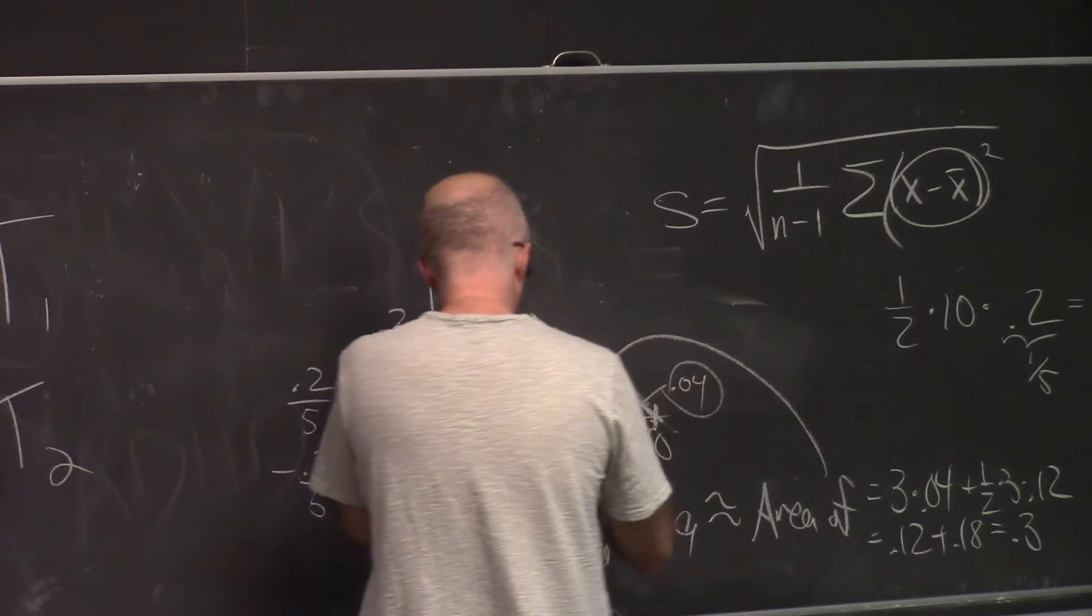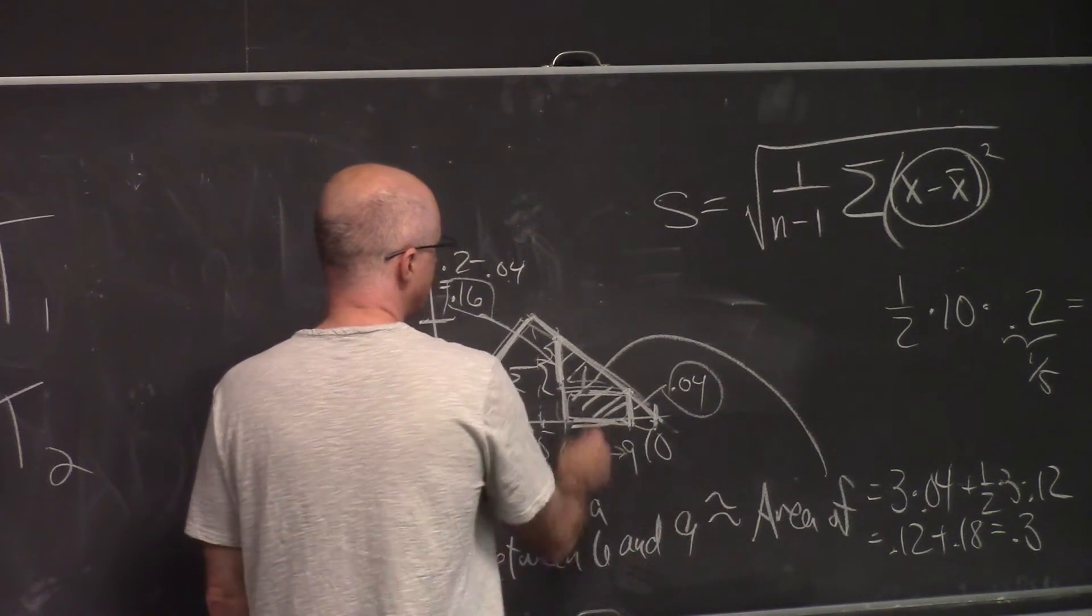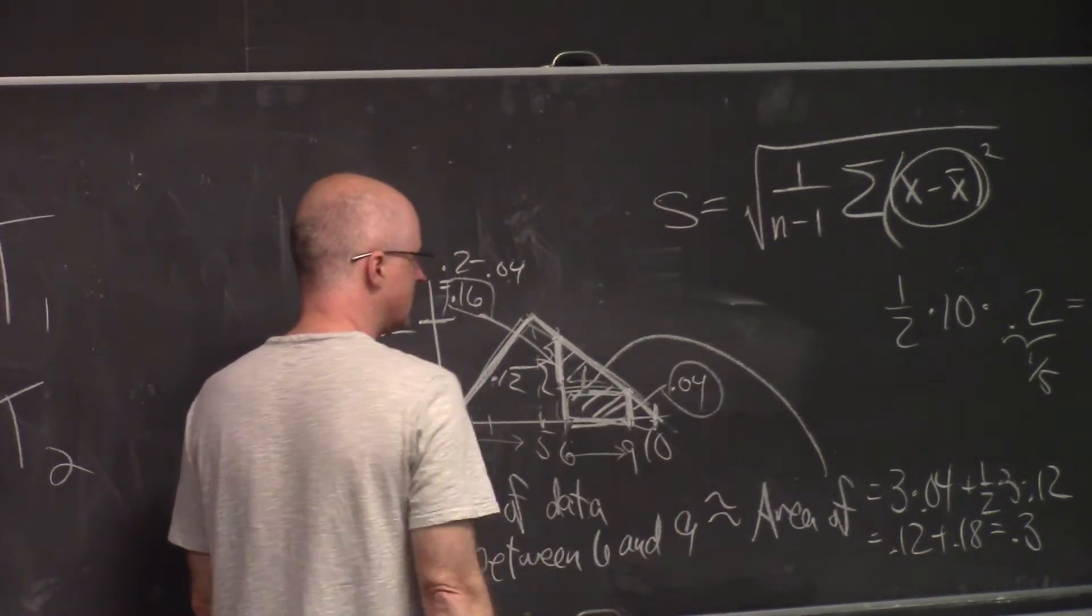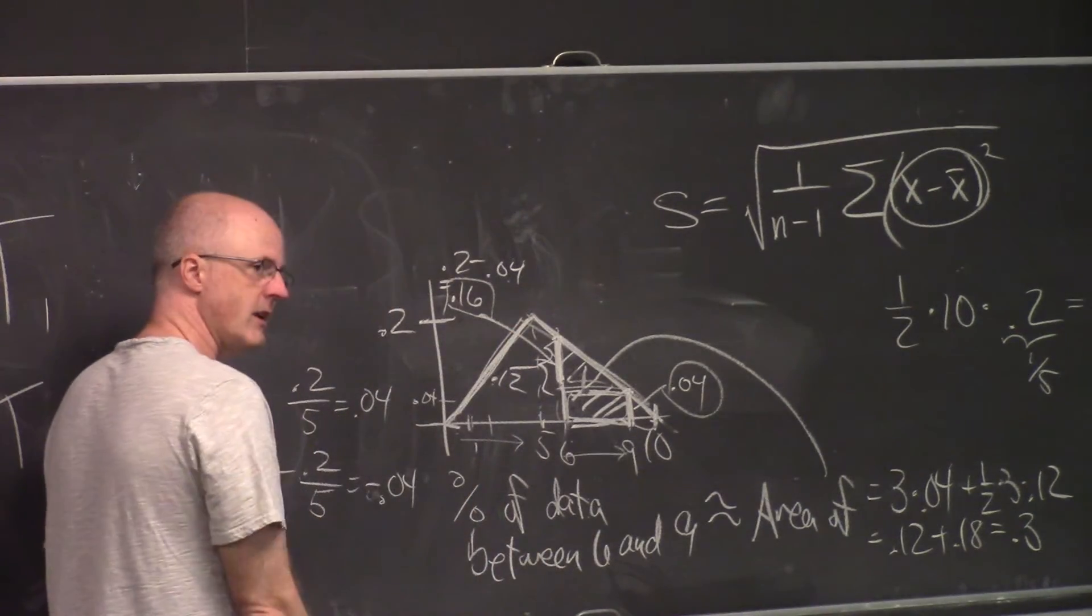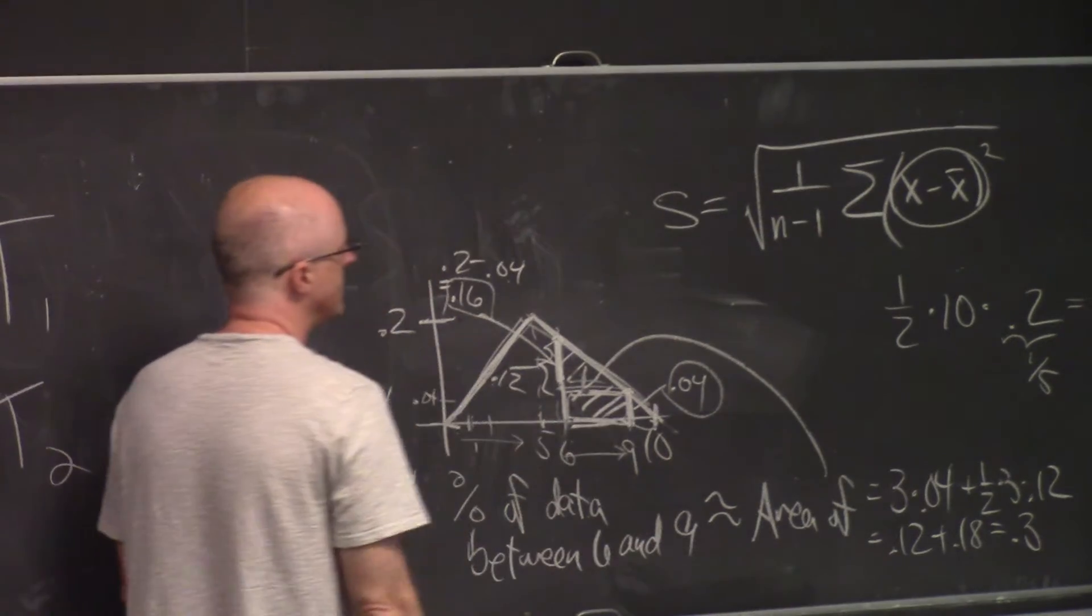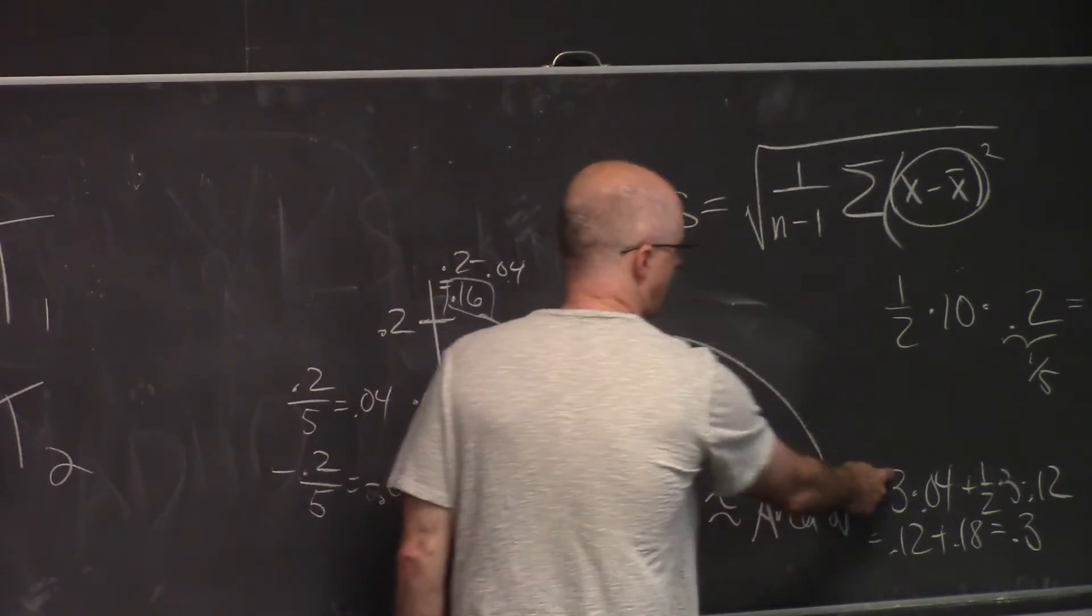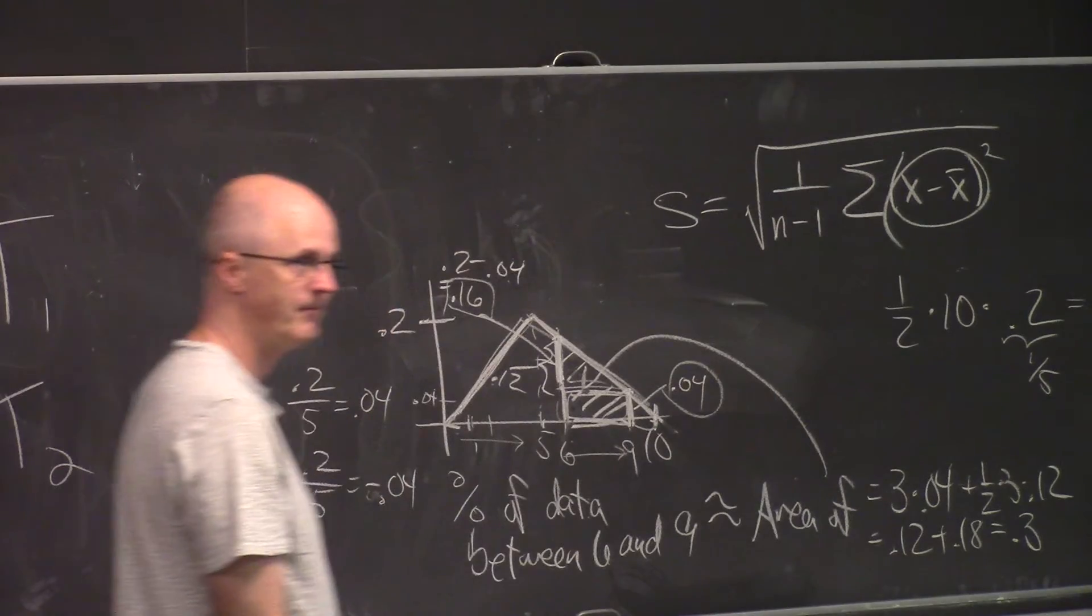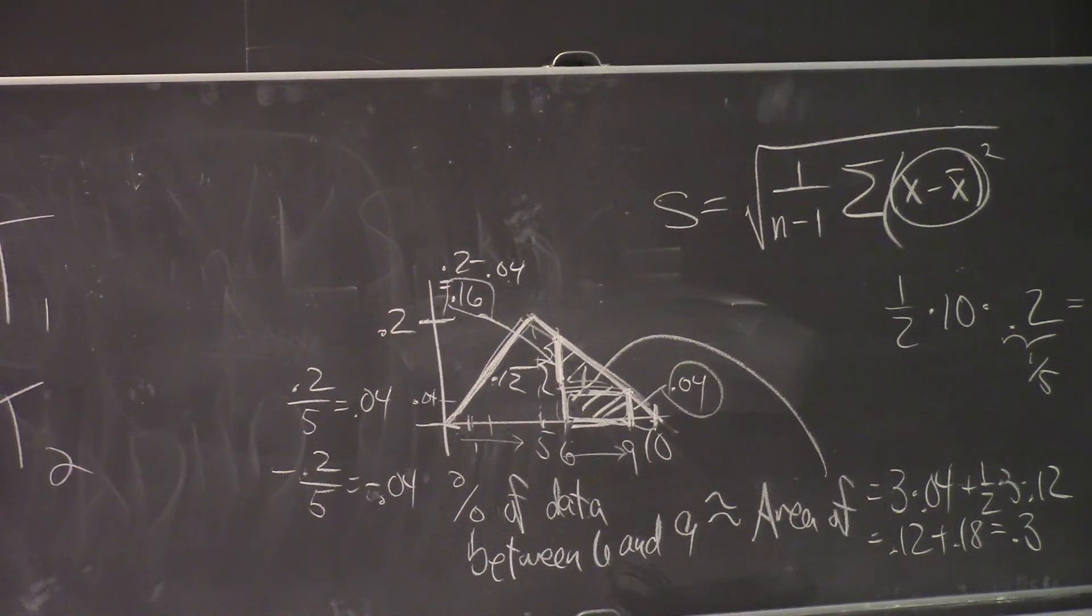That area, again, for this case can be found by adding the areas of these two objects, this rectangle and this triangle, with some careful calculations by thinking about slopes. You can find these heights. That's the area of the rectangle. That's the area of the triangle.